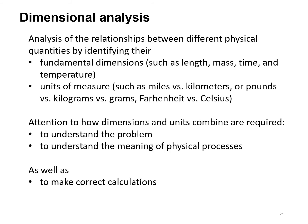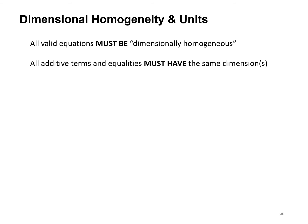Dimensional or dimension analysis. We're going to analyze the relationships between different physical quantities by identifying their fundamental dimensions—length, mass, time, and temperature—and their units of measurement: miles and kilometers, pounds and kilograms or grams, Fahrenheit versus Celsius. Attention to how these dimensions and units combine are required to understand the problem and the meaning of physical processes as well as to make correct calculations. Dimensional homogeneity: all valid equations must be dimensionally homogeneous. All additive terms and equalities must have the same dimensions or there's an error. You need to find out what went wrong.